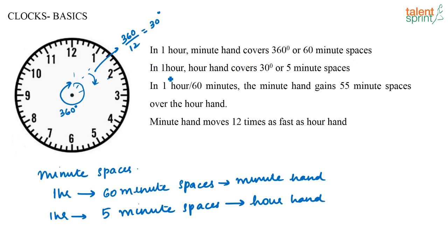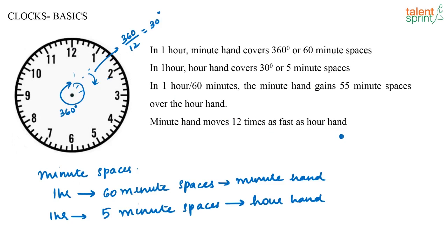In one hour, the minute hand covers 360 degrees or 60 minute spaces, while the hour hand covers 30 degrees or 5 minute spaces. In 60 minutes, the minute hand gains 55 minute spaces over the hour hand. We can also say the minute hand moves 12 times as fast as the hour hand — these concepts will be very useful when solving questions from this topic.